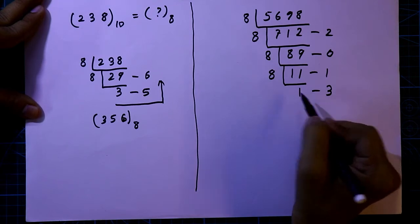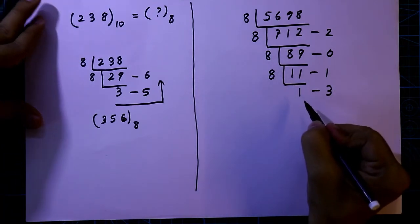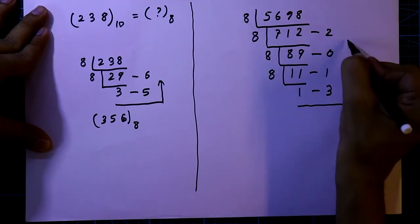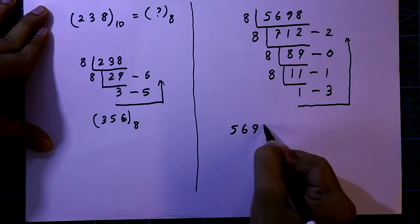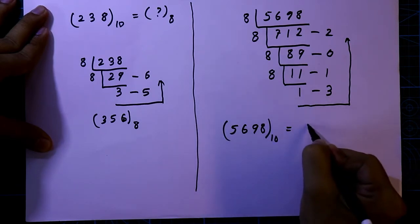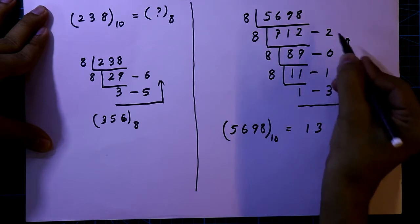Now this 1 is less than 8, so we have to stop here and we have to see from bottom to top. Now, octal equivalent of this decimal number will be 13102.